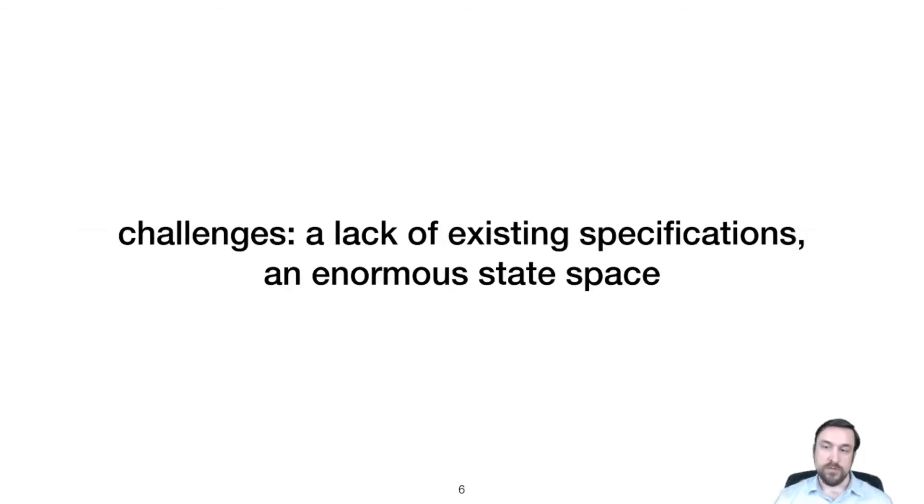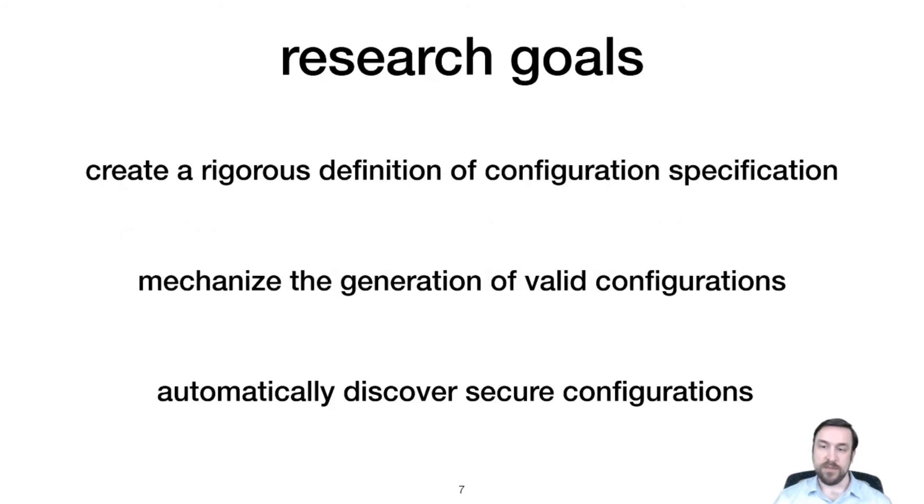But real world software often lacks complete explicit specifications of what configurations are valid and the space of possible configurations is enormous. To overcome these challenges we need some rigorous way to define what configuration specifications are, and then we can use formal methods to mechanize the generation of valid configurations and take it a step further to discover configurations that have security properties that are desirable.